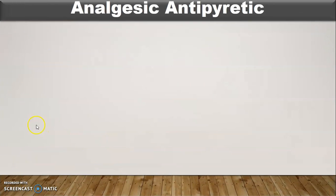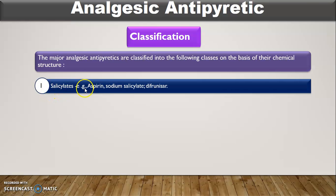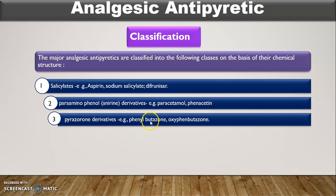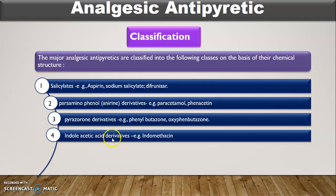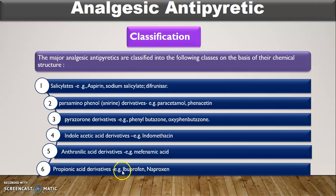With the classification of analgesic antipyretics, the major analgesic antipyretics are classified into the following groups: first, salicylates, example aspirin and sodium salicylate; second, para-aminophenol derivatives, example paracetamol and phenacetin; third, pyrazone derivatives, example phenylbutazone and oxyphenbutazone; fourth, indoleacetic acid derivatives, example indomethacin; fifth, anthranilic acid derivatives, example mefenamic acid; and sixth, propionic acid derivatives, example ibuprofen and naproxen.